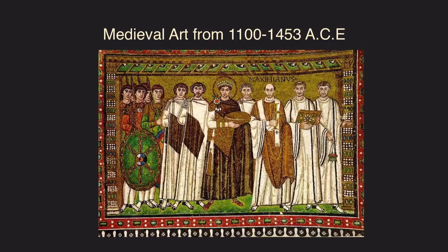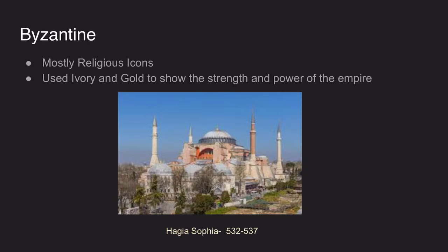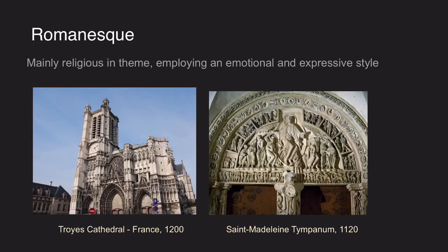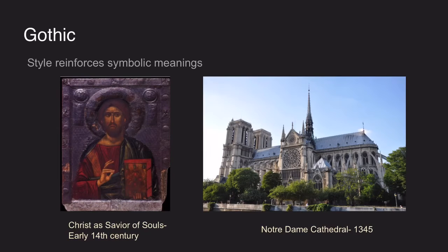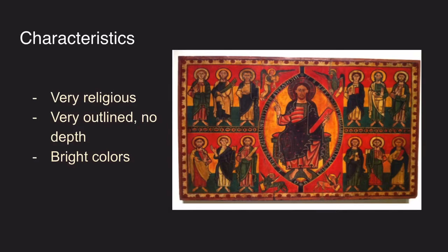Then we have medieval art from 1100 to 1453 AC. Here we have three styles: the Byzantine, which shows mostly religious icons and uses ivory and gold to show the strength of the empire; the Romanesque, which also has a mainly religious theme employing an emotional and expressive style; and Gothic, which reinforces symbolic meaning. The characteristics of medieval art are very religious themes, very outlined forms, and bright colors.